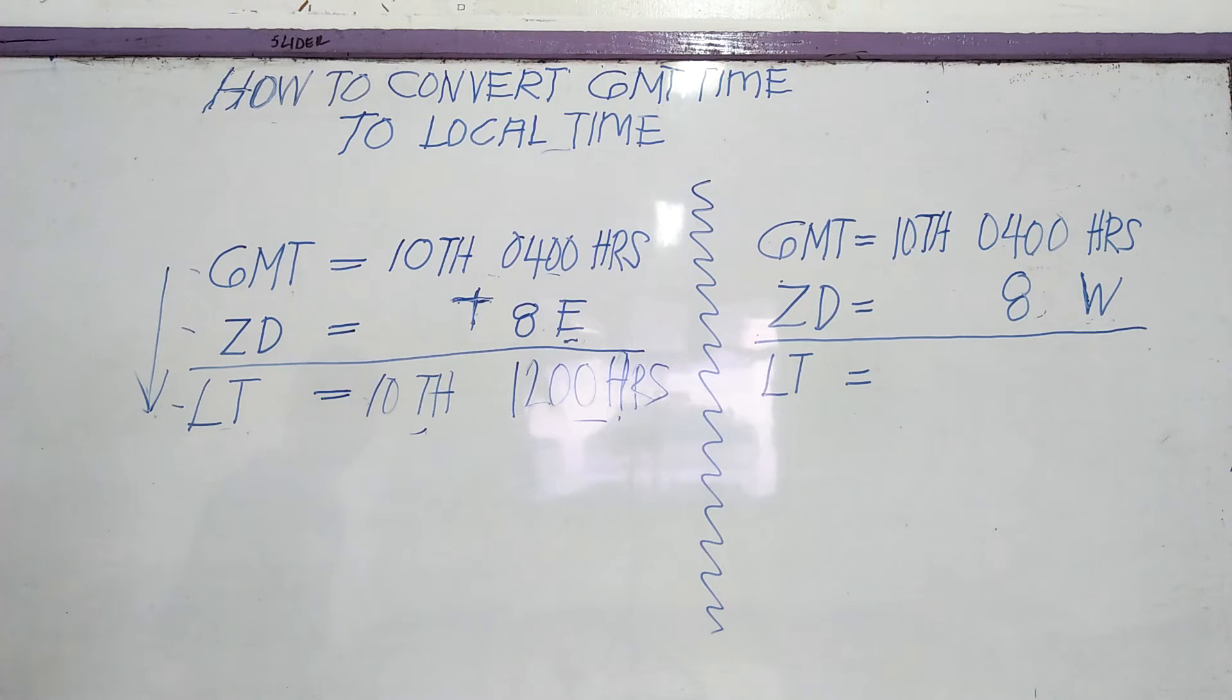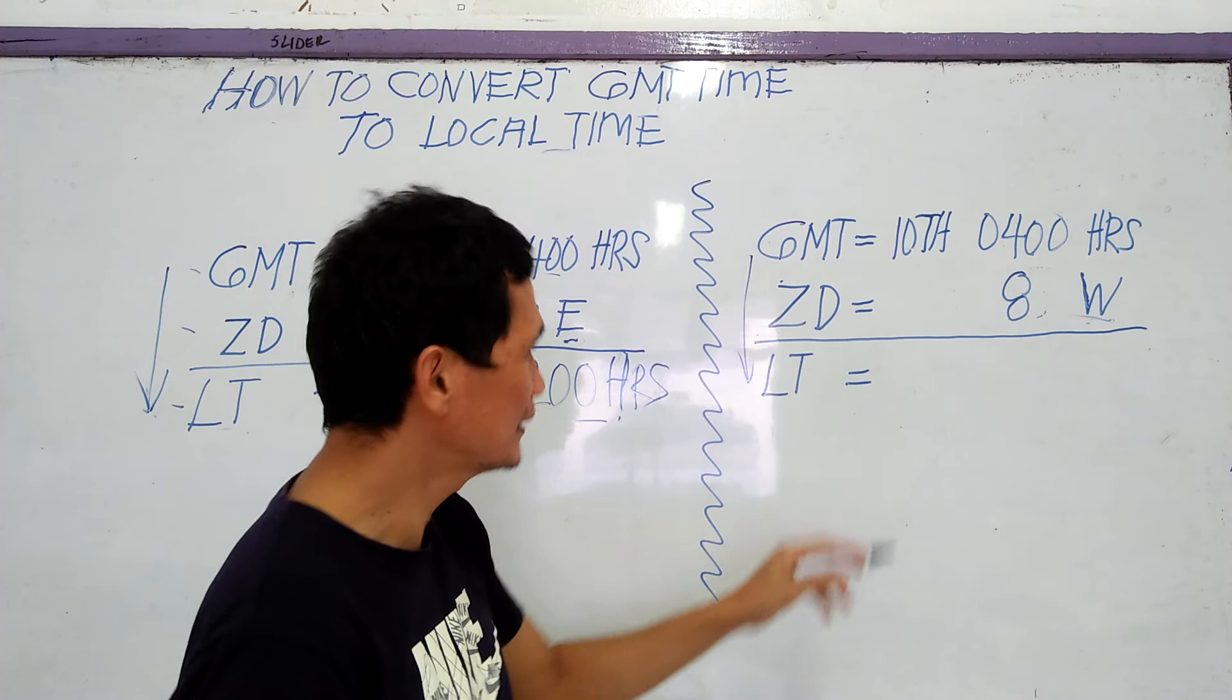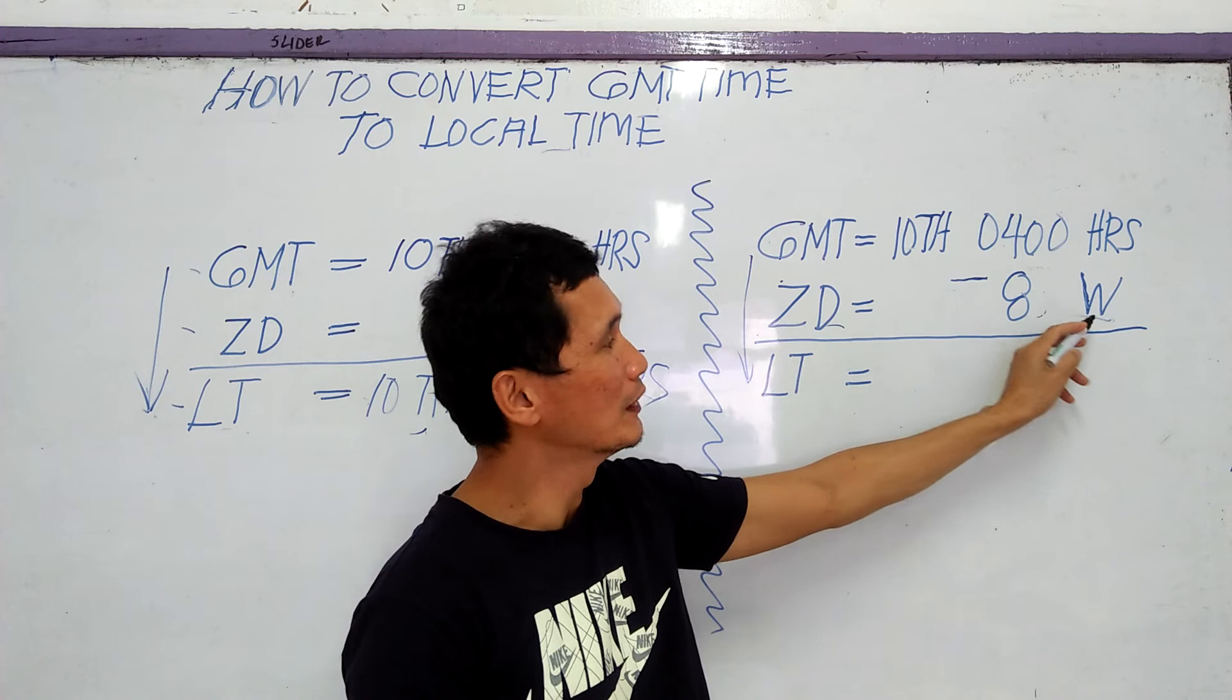Here, GMT to local time, west longitude, it is subtract. Minus. The zone description is 8 in west longitude.